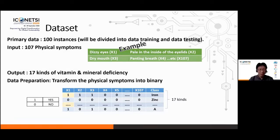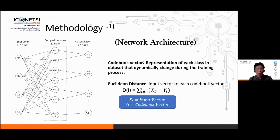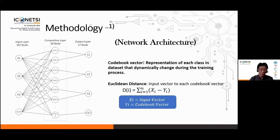The binary number 1 means 'yes' and binary number 0 means 'no.' Our neural network architecture has 107 input nodes and 17 output nodes. Using LVQ, we have 20 competitive layers between the input and output layer. The competitive layer saves the codebook vector, which is a special algorithm for LVQ that represents each class in the dataset.